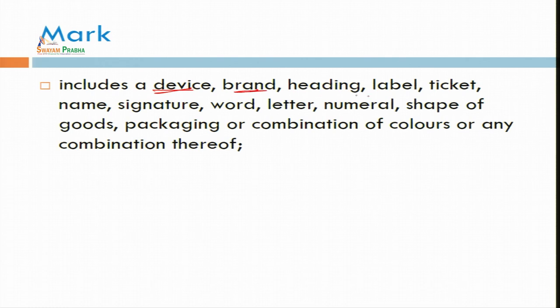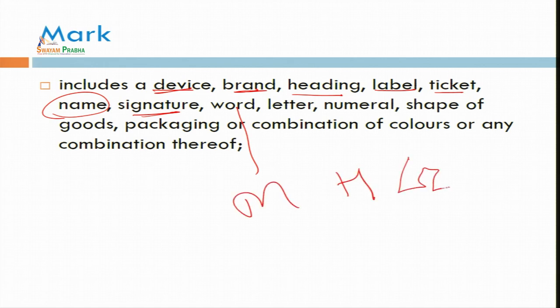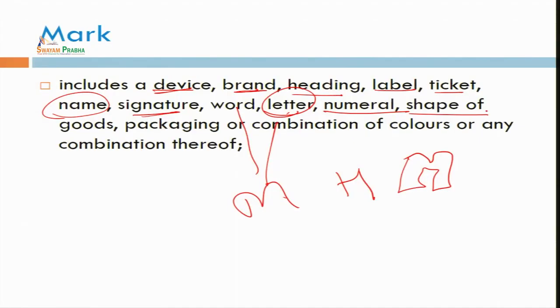A mark here is a device, it may be a brand, a heading, a label, or a ticket. It may be a name, a signature, or some word — McDonald's, Honda, Honda City, or Hyundai. It may be one letter or one word, like Maruti Suzuki. There may be a number — it may be Panch Bhai Sabun or 555. It may be the shape of particular goods that can distinguish goods and services, and that can be covered under the trademark.